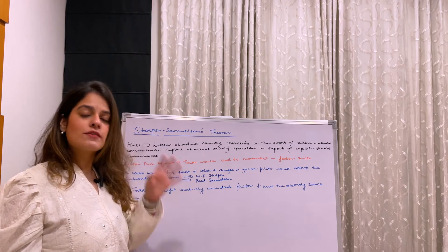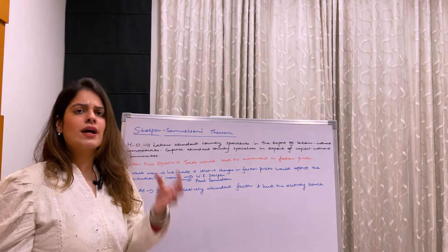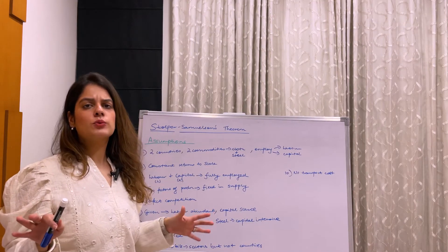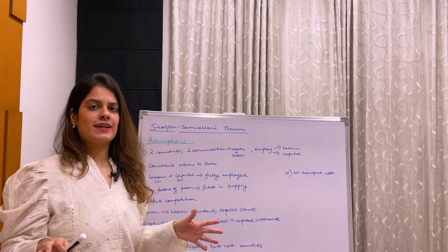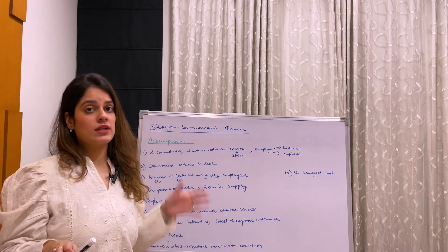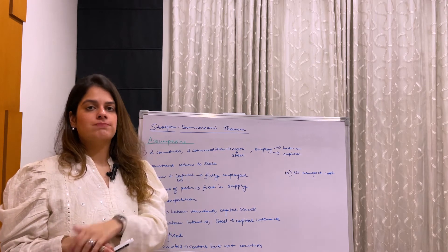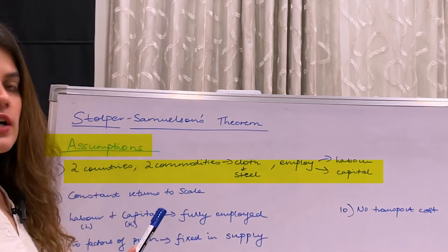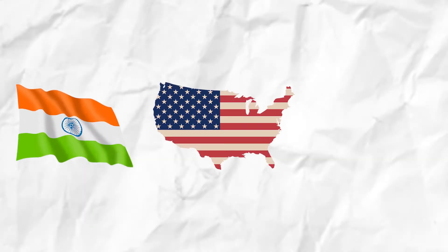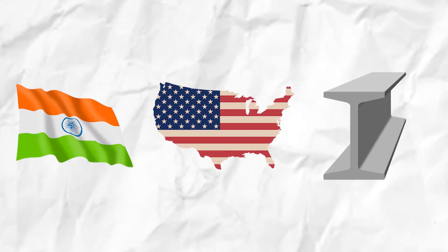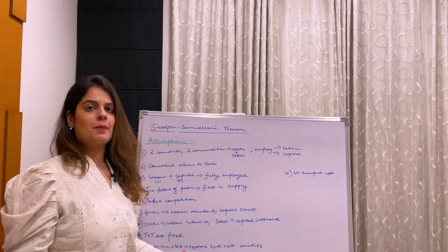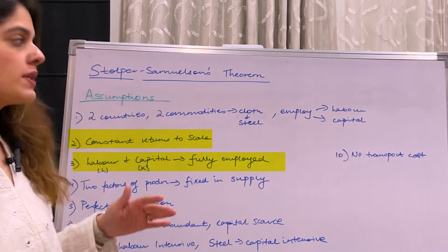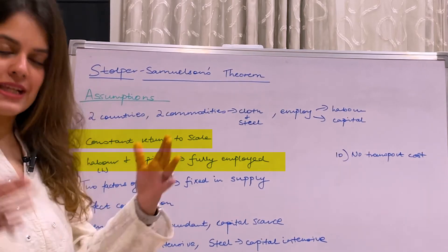Before we dive deeper, let me run through the assumptions of this theorem, because in economics we have to assume certain things to make a theory work. We are taking two countries with two commodities — maybe the US and India, with commodities cloth and steel. We have only two factors: labor and capital — land and entrepreneurship are not included. There is constant returns to scale.